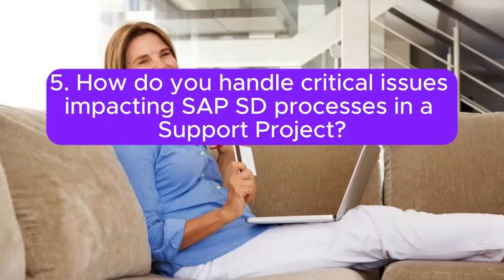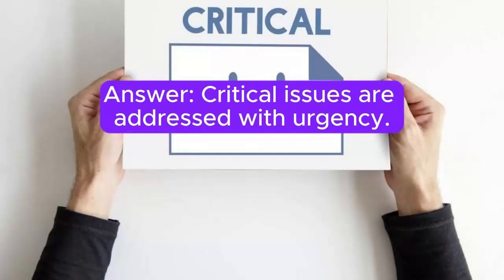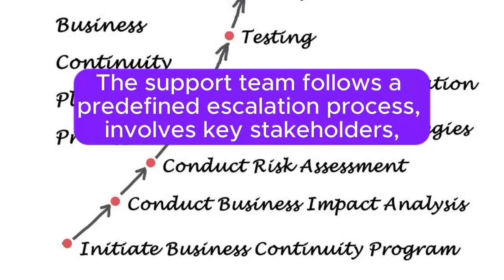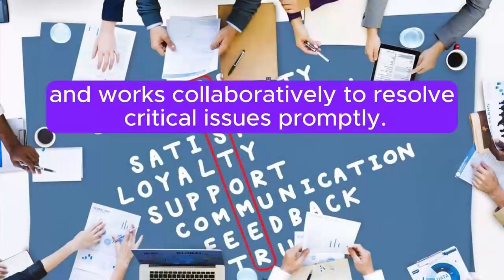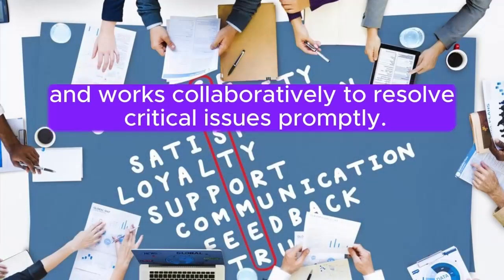Question 5: How do you handle critical issues impacting SAP SD processes in a support project? Answer: Critical issues are addressed with urgency. The support team follows a predefined escalation process, involves key stakeholders, and works collaboratively to resolve critical issues promptly.